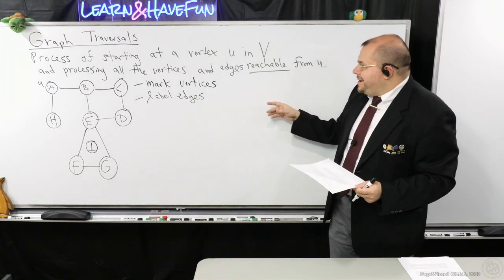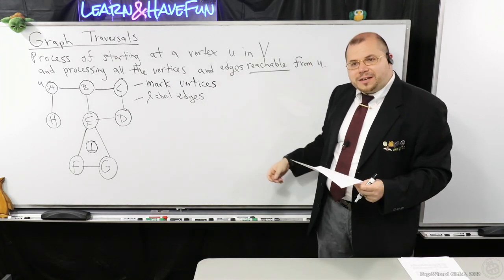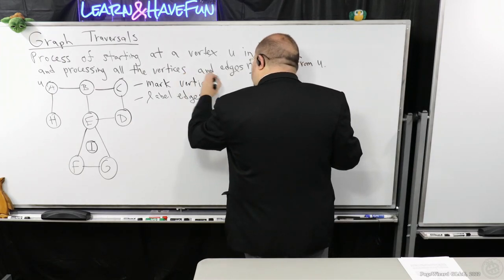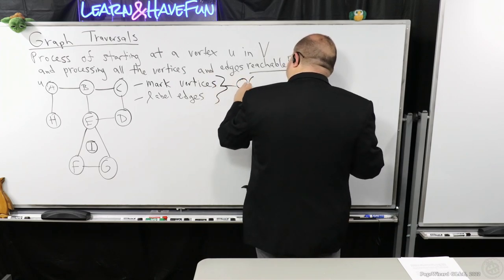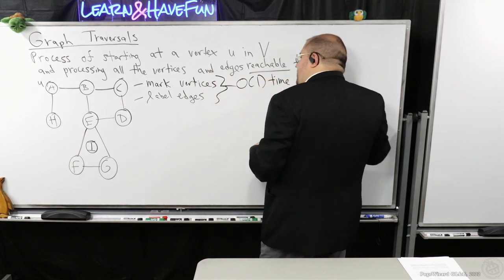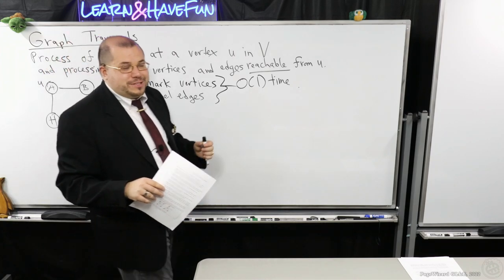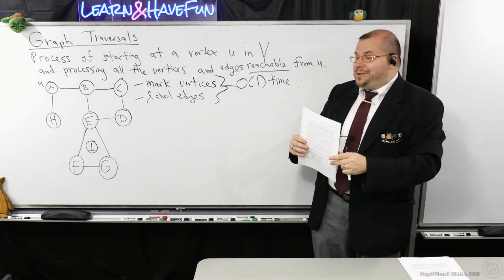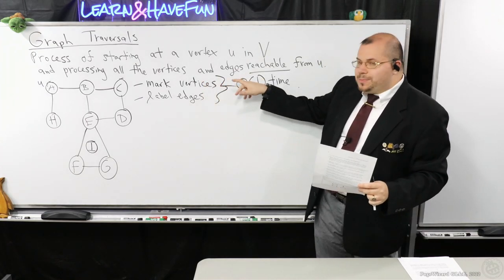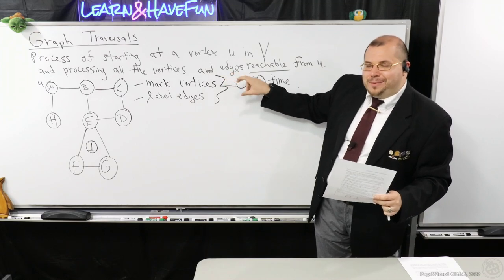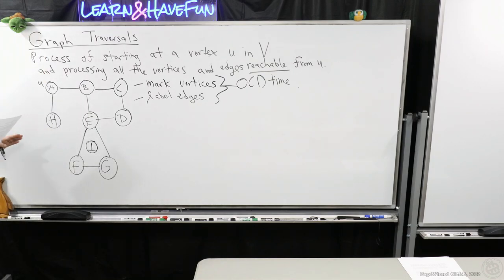You might ask how efficiently we can do this. If you have direct access to those objects, there are ways to represent the graph so that marking vertices and labeling edges can be done in constant time. I'll presume there's some ability to label edges and mark vertices — nice and simple.